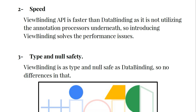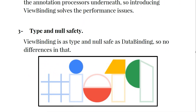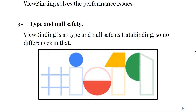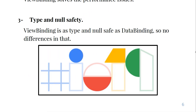The view binding API is faster than data binding because it does not utilize annotation processors underneath, so introducing view binding solves performance issues. Regarding type and null safety, view binding is type-safe and null-safe just as data binding, so there is no difference there at all.